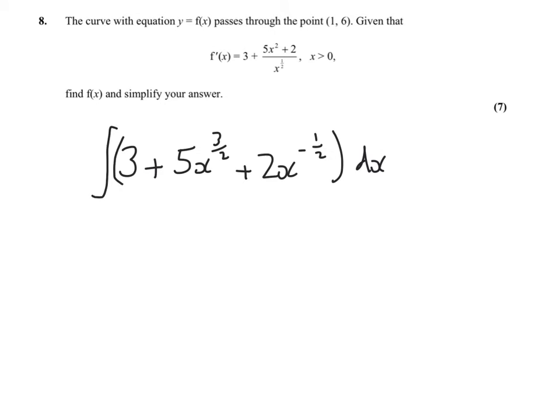Remember you've got a plus C, but you're going to put in that point there, 1, 6, to find out what C is. I'll give you a clue now, that C equals negative 3. So you should be able to do the rest of that.